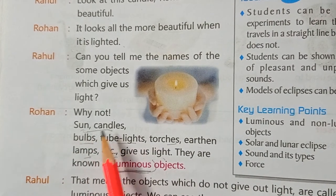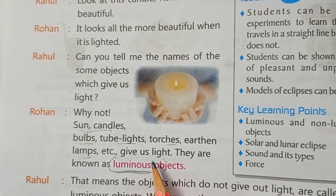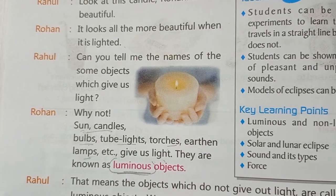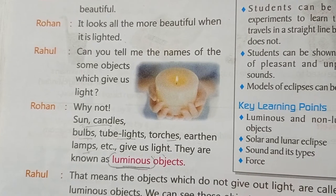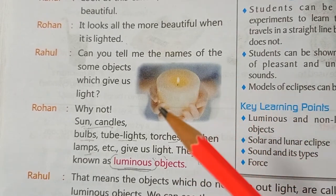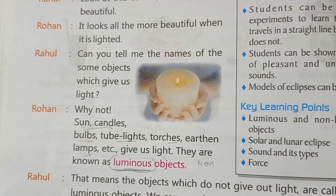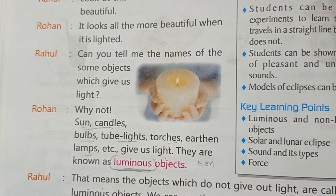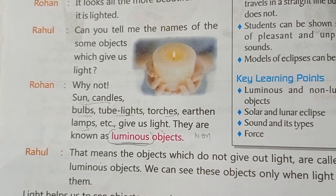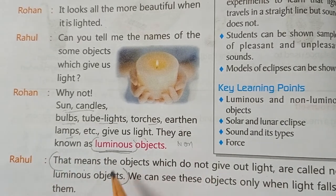The sun gives us light, candles when lit give light, bulbs, tube lights, torches, chimneys, and even stars give us light. So all these are luminous objects. And those which do not give out light — like your pencil, book, bed, bed sheet, water bottle, fan — these are called non-luminous objects.